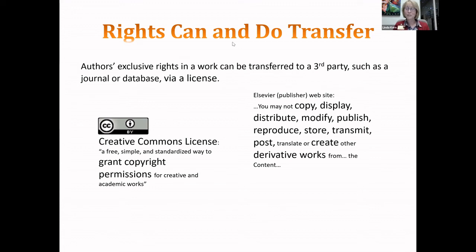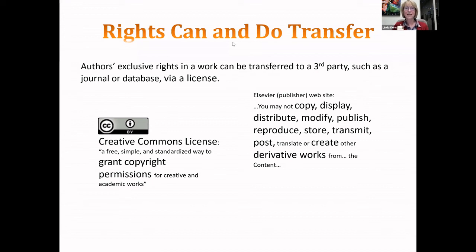Sometimes rights are transferred and they dead-end. For example, if I write an article and get it published in an Elsevier journal, Elsevier takes my rights—I have to assign them in order to be published. They then tell the next person, perhaps you who wants to use it in your dissertation, that you may not copy, display, distribute, or reproduce it. Elsevier is retaining those rights and not allowing them to pass on. Creative Commons is broad and wide open; Elsevier and other academic publishers are really, really tight.